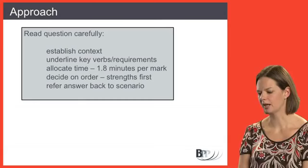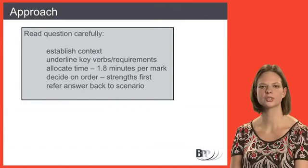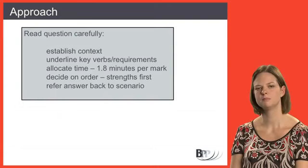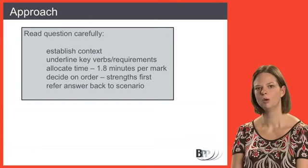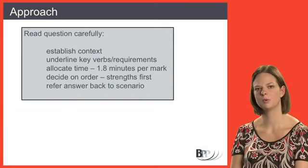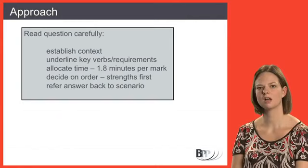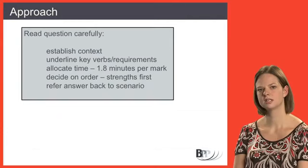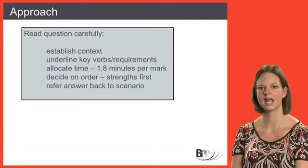When approaching questions, establish the context and get ideas forming about what the company does, and underline key verbs and requirements to make sure you're clear on what each sub-requirement asks. Allocate your time not just to individual questions but to the sub-parts. Use 1.8 minutes per mark as a guide for how long to spend planning and writing, and as a guide for the volume of work required. If something's going to take you 30 minutes, the examiner's not going to give you two marks for it, so if you're spending ages on a two-mark requirement, you need to move on.